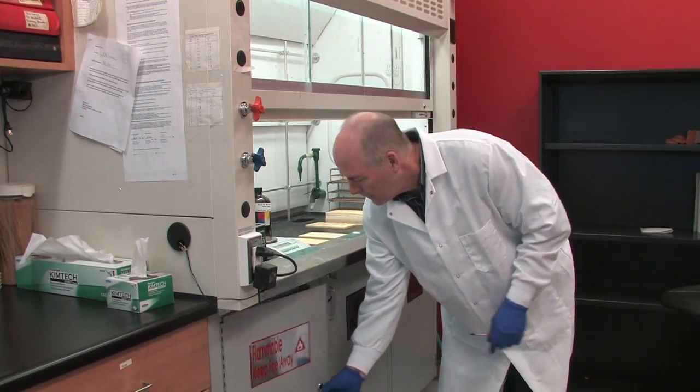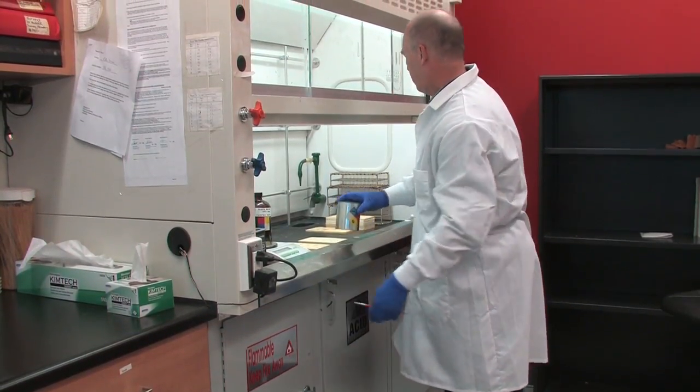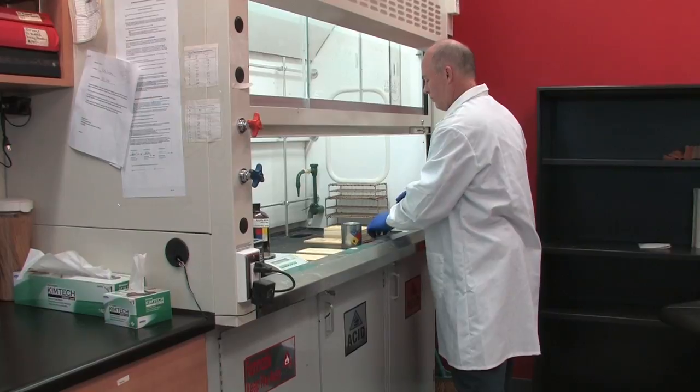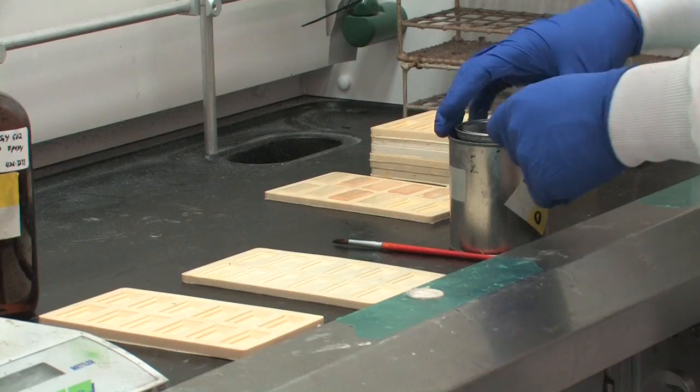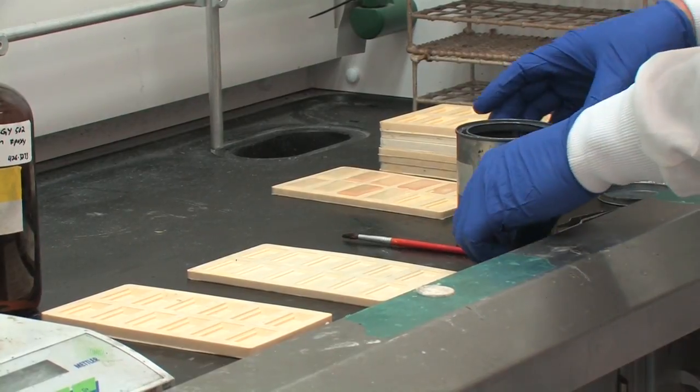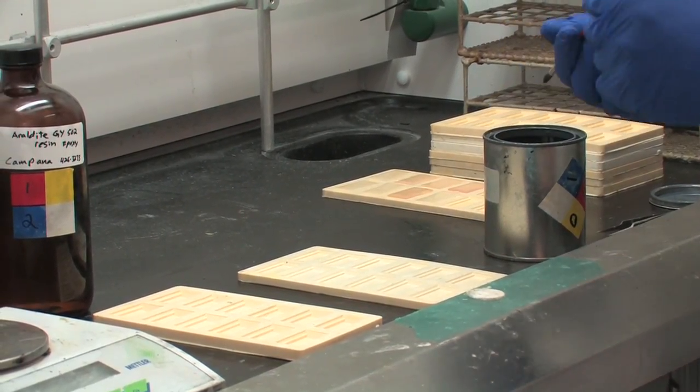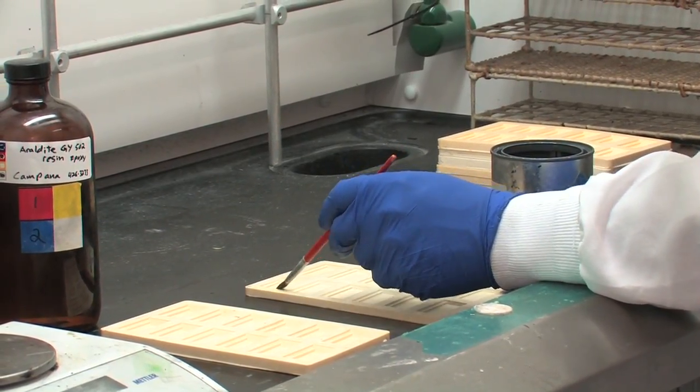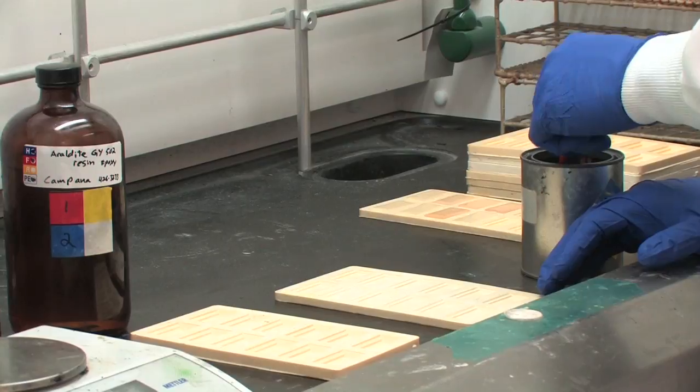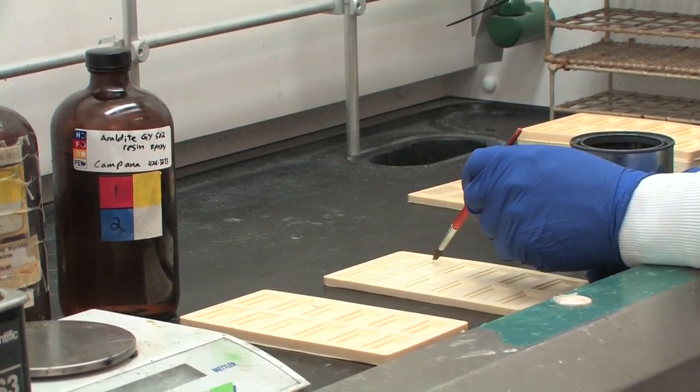Using a small paint brush, paint the wells with free coat, a releasing agent. The free coat is stored under the fume hood with the epoxy resin and hardener. Open the can and apply a thin layer of the agent sparingly in the wells of the molds. Be sure to use protective gloves when handling the releasing agent and the epoxy.